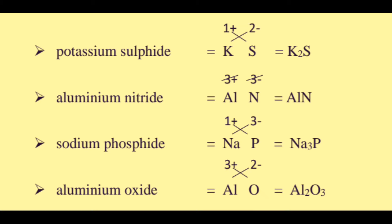Sodium phosphide. Sodium is Na with oxidation number 1 plus. Phosphide is P with oxidation number 3 minus. 1 plus and 3 minus — cross the numbers. The formula is Na3P.